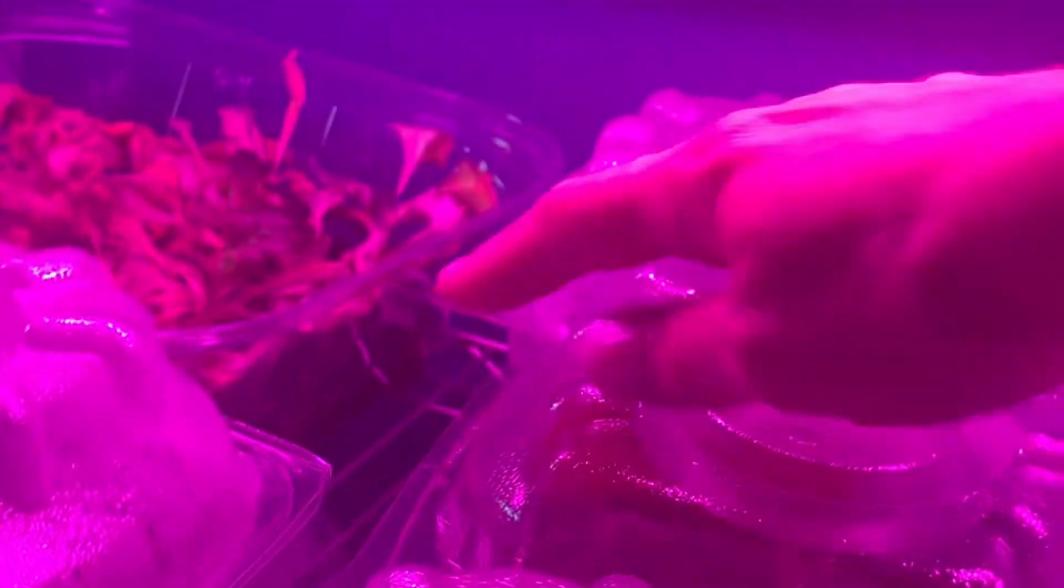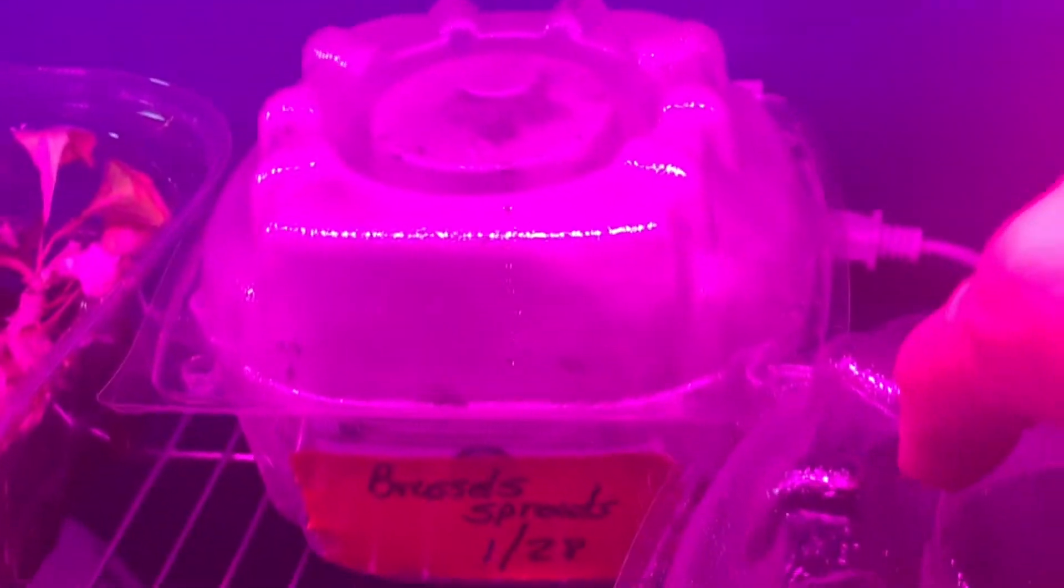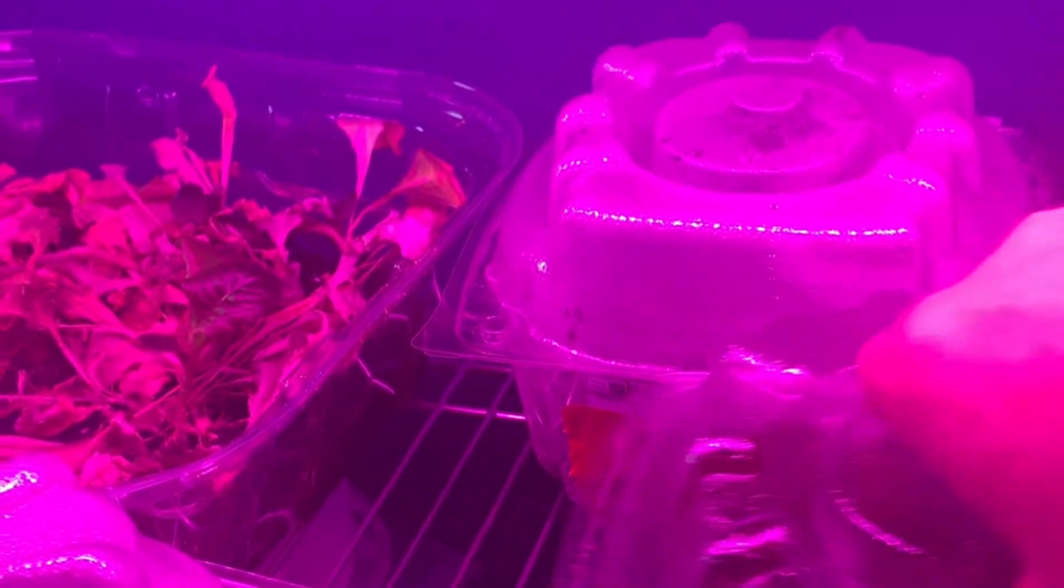And so, I did some lettuce, some buttercrunch, some red leaf, and also some micro tom tomatoes and some brussel sprouts. So, I'm starting those in there. And then this little container here, I'm doing some microgreens.